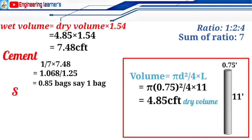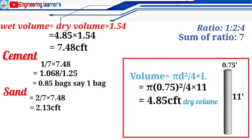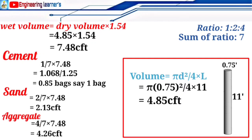Now we find the quantity of sand. The sand ratio is 2, divided by the sum-up ratio of 7, multiplied by the volume of 7.48: (2/7) × 7.48 = 2.13 cubic feet of sand.